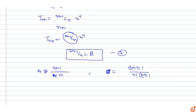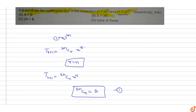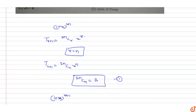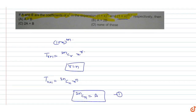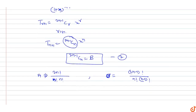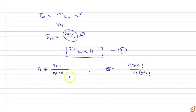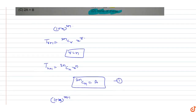Looking at the options: a equals b — not correct; a equals 2b — not correct; 2a equals b — not correct. So the correct option is none of these. There is no simple relation between a and b of the form given. a = (2n)!/(n!*n!) and b = (2n-1)!/(n!*(n-1)!), so the correct option is none of these.